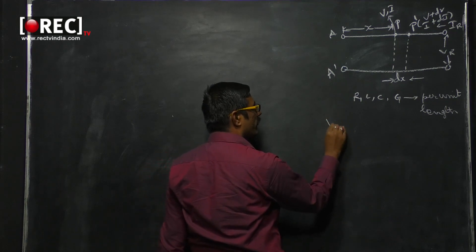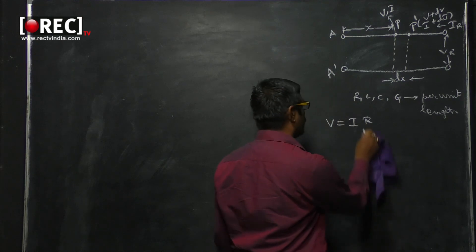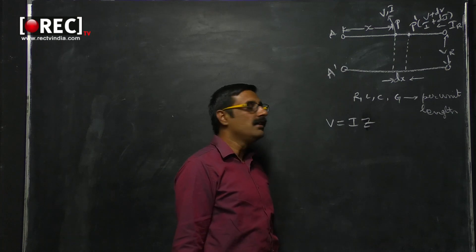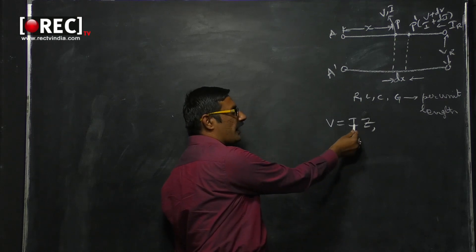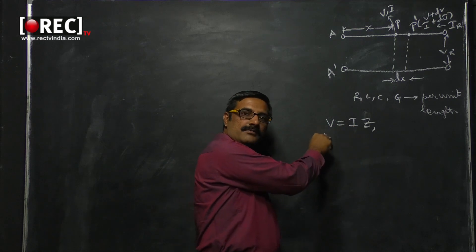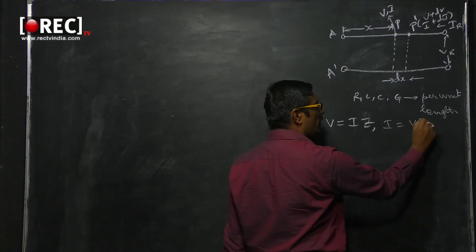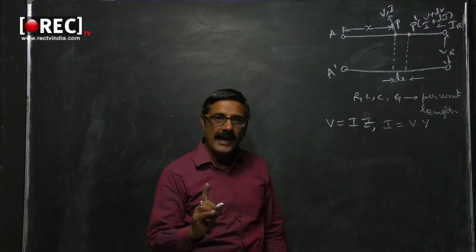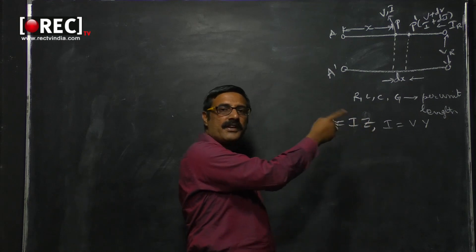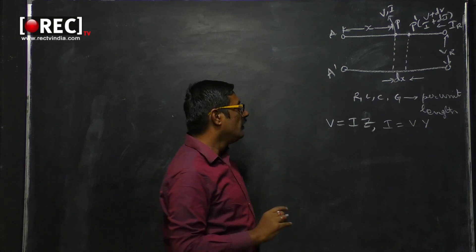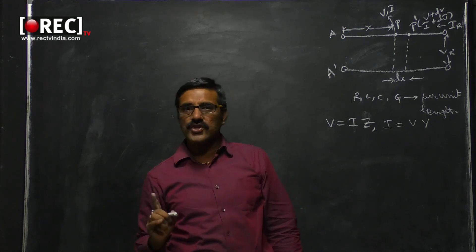The basic Ohm's law is V equals IR, and in terms of impedances this can be written as V equals I times Z. The same equation can also be written as I equals V times Y, where Y stands for one over Z and Y is called the admittance. Of these four elements, R and L are series elements and G and C are parallel or shunt elements.